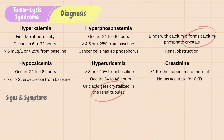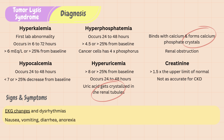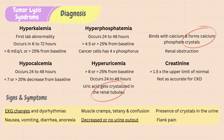Signs and symptoms of TLS are related to the electrolyte abnormalities and renal dysfunction. There may be EKG changes and dysrhythmias associated with hyperkalemia and hypocalcemia. Gastrointestinal symptoms such as nausea, vomiting, diarrhea, and anorexia may occur. Hypocalcemia can cause muscle cramps, tetany, and confusion. There may also be decreased urine output or no urine output, and/or presence of crystals in the urine which can cause flank pain.